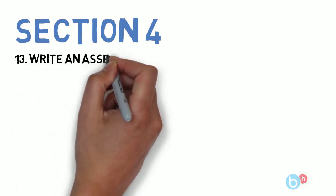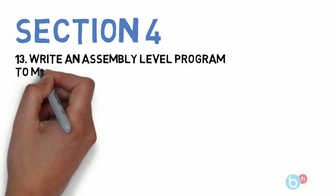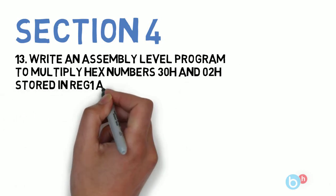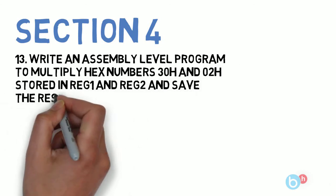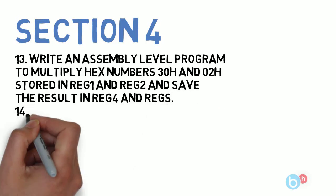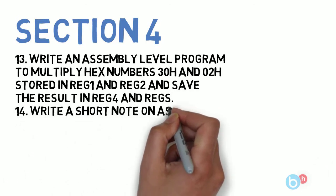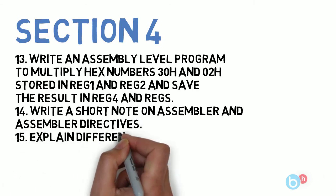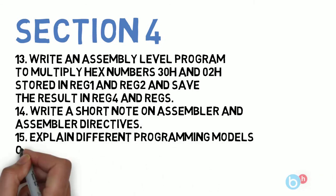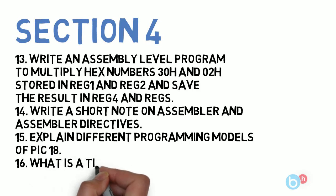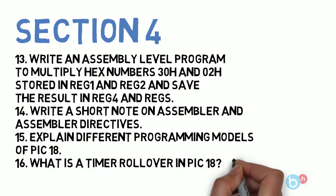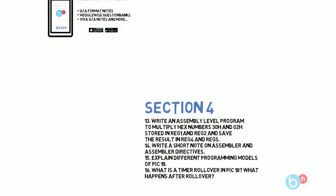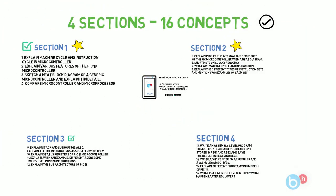The first is write an assembly level program to multiply hex numbers 30H and 02H stored in REG1 and REG2 and save the result in register 4 and register 5. Next is short note on assembler and assembler directives. Next is explain different programming models of PIC 18. And the last one is what is a timer rollover in PIC 18 and what happens after rollover.